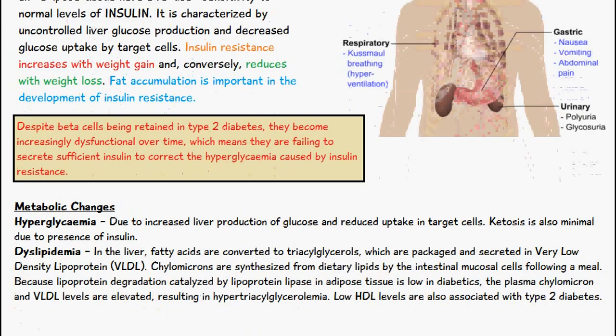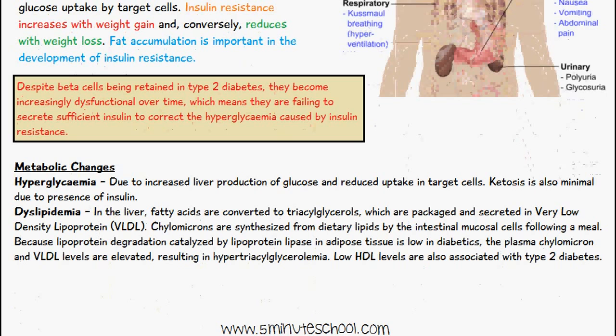A few of the metabolic changes associated with type 2 diabetes mellitus: the first is hyperglycemia, where we have elevated levels of glucose in the blood due to increased liver production of glucose and reduced uptake in the target cells. We also have minimal amounts of ketosis because we still have the presence of insulin.